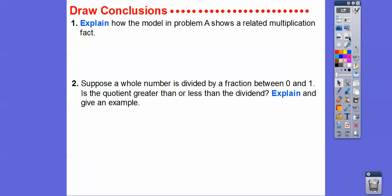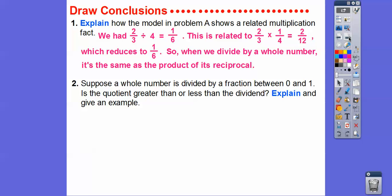Explain how the model in part A shows a related multiplication fact. We had two-thirds divided by four, which gave us one-sixth. This is related to two-thirds times one-fourth, where one-fourth is the reciprocal of four over one. Two times one equals two, three times four equals twelve. So two-thirds times the reciprocal one-fourth gives us two-twelfths, which reduces to one-sixth. When we divide by a whole number, it's the same as multiplying by its reciprocal. That's what leads us into the next lesson.